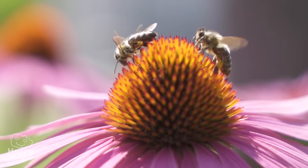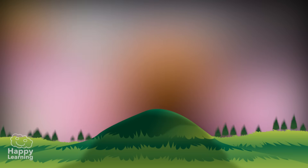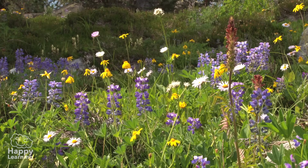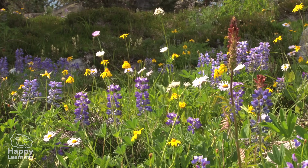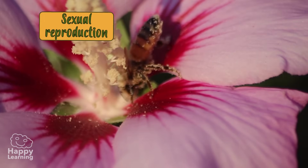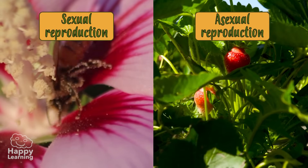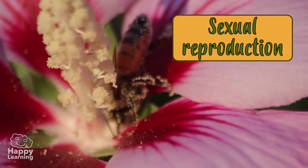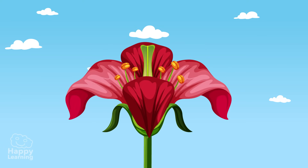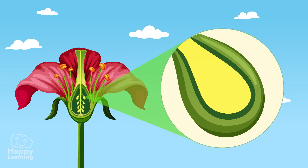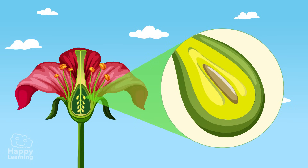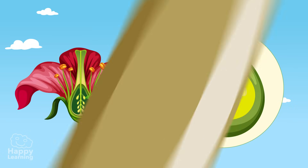Today we're going to get to know about sexual reproduction. Plants have two very different ways of reproducing: they can have sexual or asexual reproduction. Sexual reproduction happens in the plant's flowers, when a male sex cell joins a female sex cell. When time passes, this cell union produces a seed from which a new plant will grow.